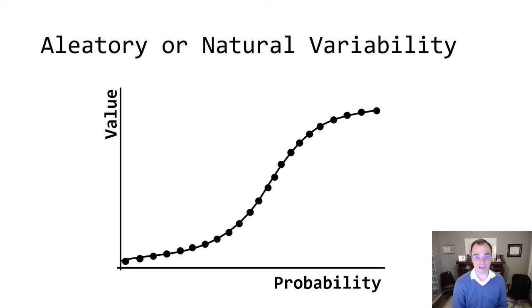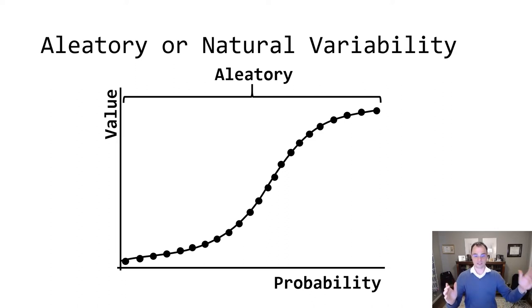We don't know what the flow is going to be next year. We don't know what the damage is going to be next year. It varies naturally and that's an aleatory uncertainty. When we think about aleatory uncertainty, it's going to span the full probability range from the zero year event to the never-to-be-exceeded year event.